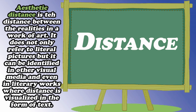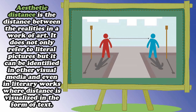Another visual element is what we call distance. Aesthetic distance is the distance between the realities in a work of art. It does not only refer to a literal picture, but can be identified in other visual media and even in literary works where distance is visualized in the form of text. Nowadays the term distance is very popular — we are all practicing social distancing, as required by law due to coronavirus-19. There is a particular space between subjects, as shown in this example. Look at this — there is a distance.